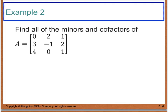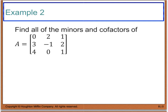Example 2 says to find all of the minors and cofactors of the matrix. I'll find the minors first since cofactors are just a possible sign change of the minors. For M11 — the minor of row 1, column 1 — I cancel everything in that first row and first column, leaving a 2 by 2 matrix. I get negative 1 times 1, which is negative 1, minus 0 times 2, which is 0. So M11 equals negative 1.